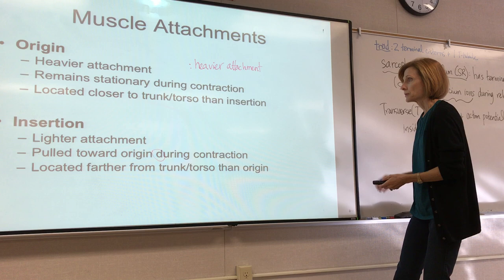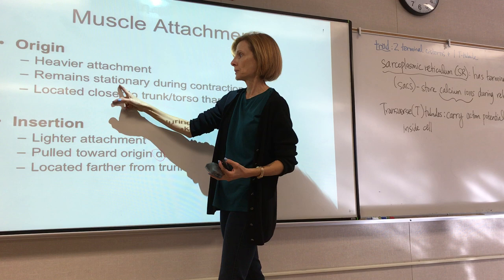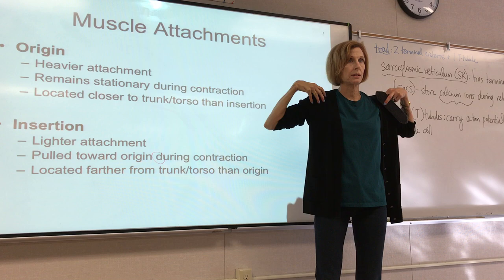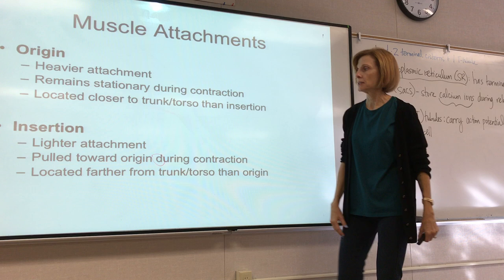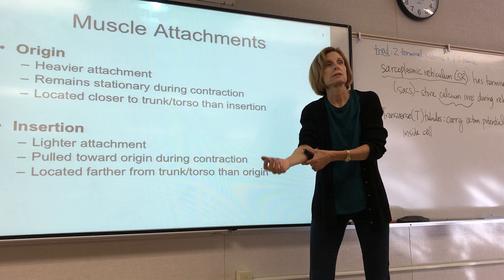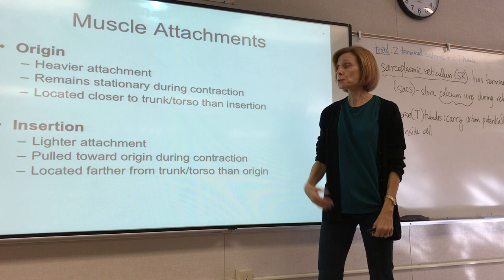The origin is the heavier attachment — it does not move and is usually closer to or on the trunk or torso, which is why it's heavier. The insertion is lighter, so it gets pulled toward the origin during contraction. The insertion is usually located farther away from the trunk on a body part that is lighter and easier to move.